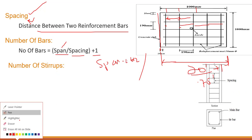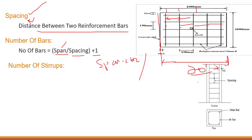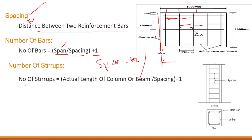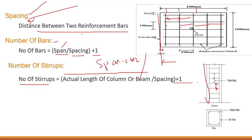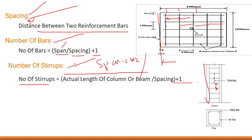For number of stirrups or ties, the formula is: number of stirrups = actual length of column or beam divided by spacing between two stirrups, plus one. It is very important to understand what spacing is, how to find the number of bars, and how to find the number of stirrups.